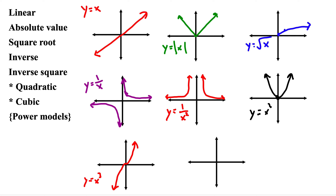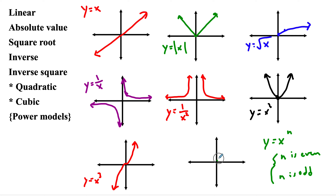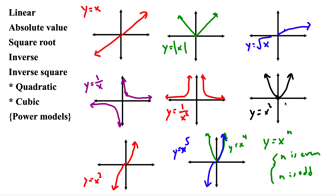Power models in general are of the form y equals x to the n power, where n is an integer that can be even or odd. If n is even, it's going to look like a quadratic. For example, y equals x to the fourth looks a lot like a quadratic, but narrower because it increases more rapidly. If n is odd, like x to the fifth, it does the same thing but much faster — positive stays positive, negative stays negative. So even powers take the shape of a quadratic, and odd powers take the shape of a cubic.